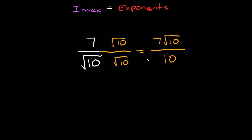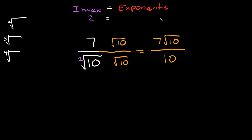The reason we're able to do this — a shortcut way of thinking about it — is because the index is equal to the exponents. With a square root symbol, we don't normally write the index. The index is the number to the outside of the radical, so for a square root it's technically a 2, for a cube root it's a 3, for a fourth root it's a 4. So for this problem our index is equal to 2. Inside the radicals we have a 10, which is 10 to the first power, and same thing on the other side. So we have 1 plus 1, which equals 2 — our index equals our exponents, 2 is equal to 2.